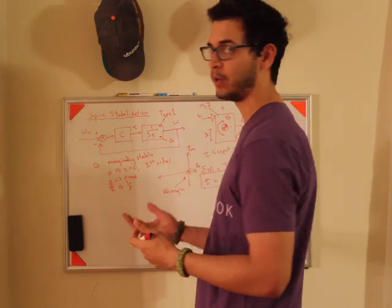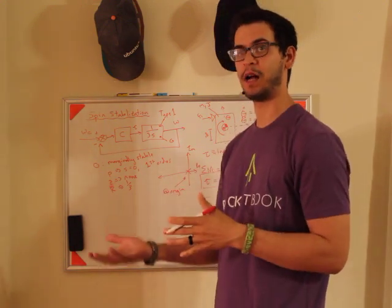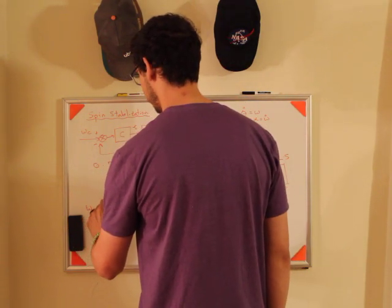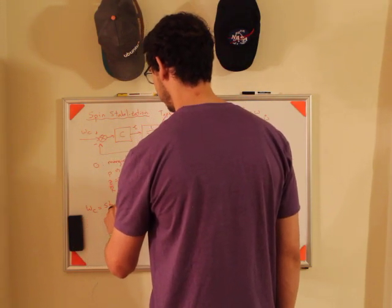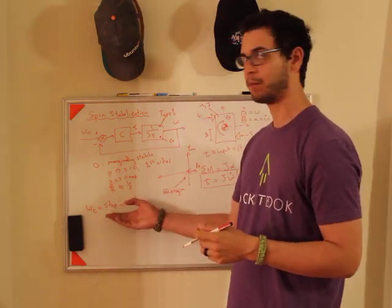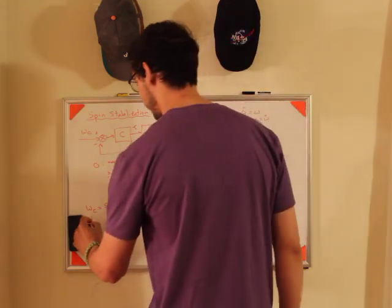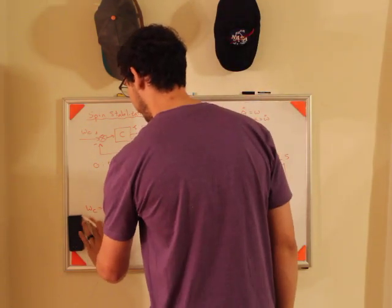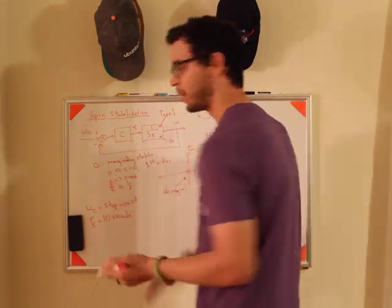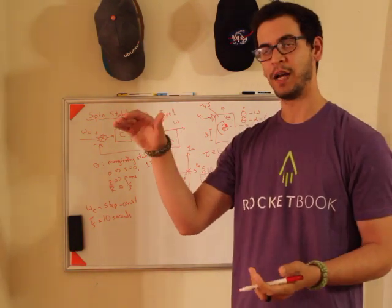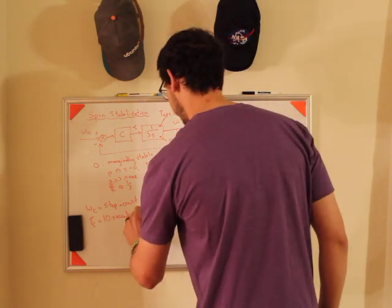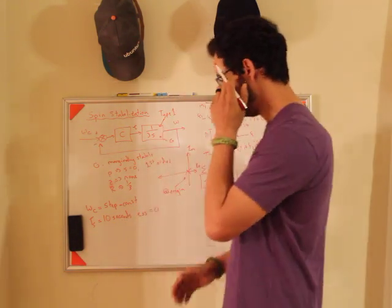Now, for this example, I want this system to track a constant angular velocity. So omega c, I want the input to be a step or a constant, something like that. So if I want a step input, what sort of transient response do I want? Well, I probably want a settling time of, let's say, 10 seconds. So I want it to get to the commanded angular velocity in 10 seconds. And then I also want the steady state error to be zero.